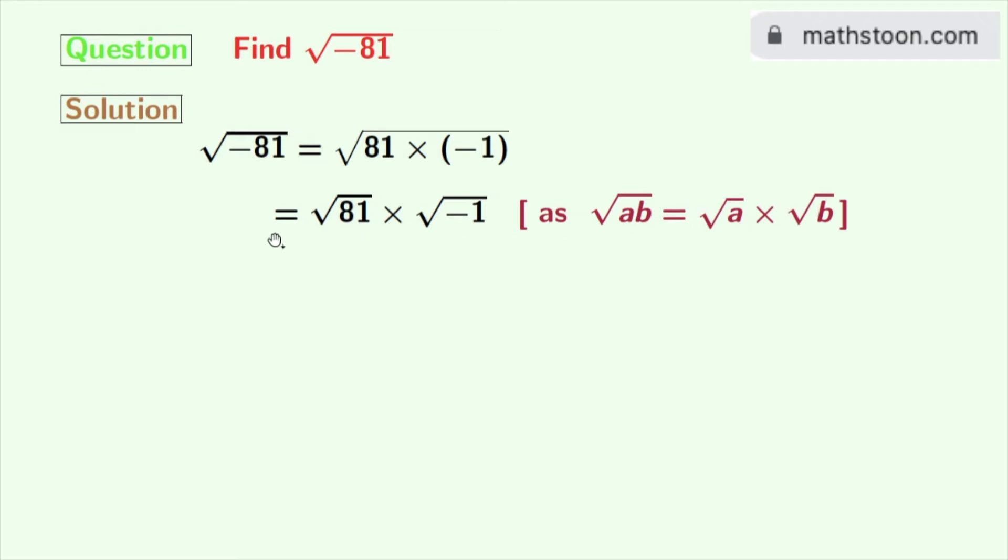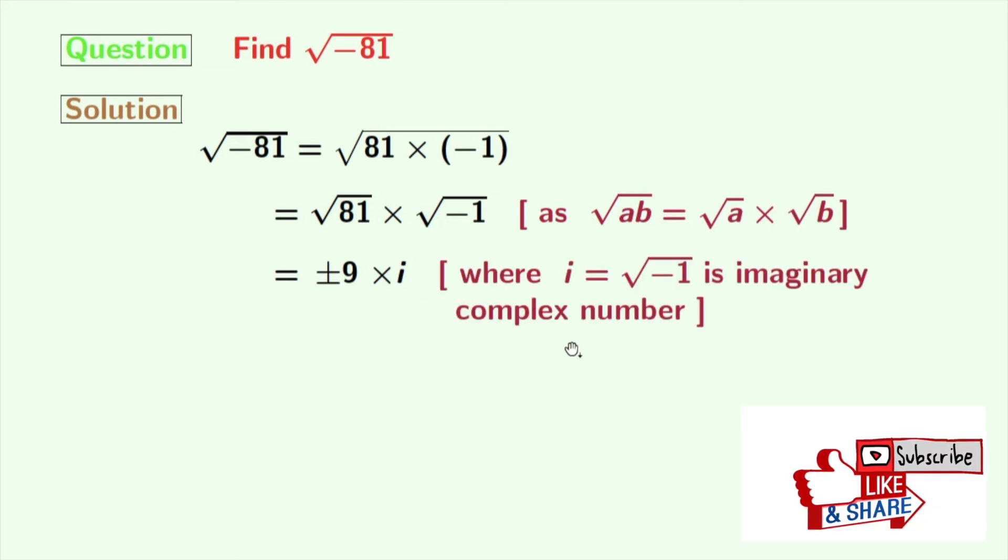Now as root over 81 is plus minus 9, so we have it, and root over minus 1 is i, where i is an imaginary complex number and its value is root over minus 1.